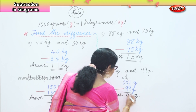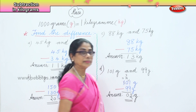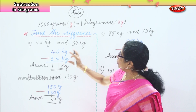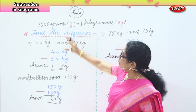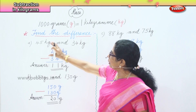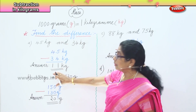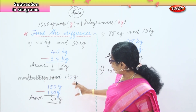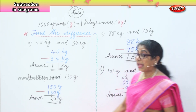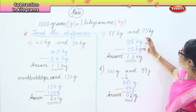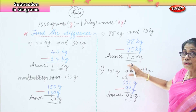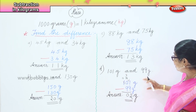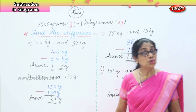So we learnt to find the difference when given two numbers and working with mass. 45 kg take away 34 kg gives 11 kg. 150 grams take away 130 grams gives 20 grams. 88 kg take away 75 kg gives 13 kg. And 101 grams take away 99 grams gives 2 grams.